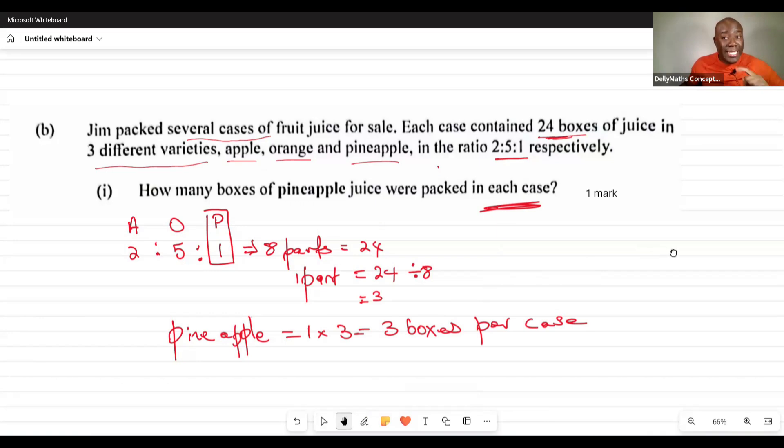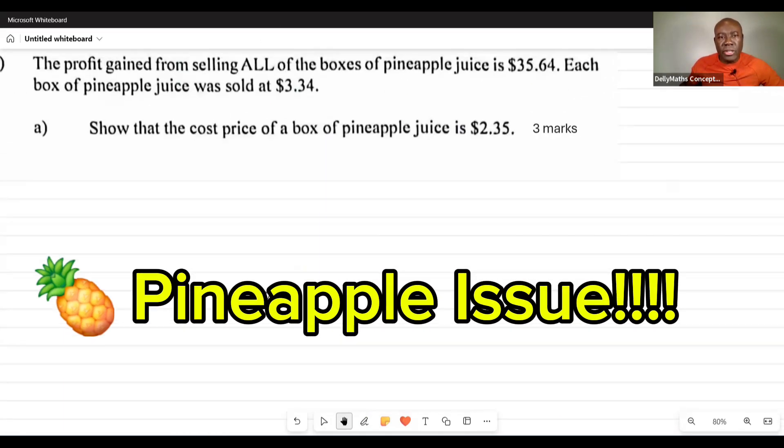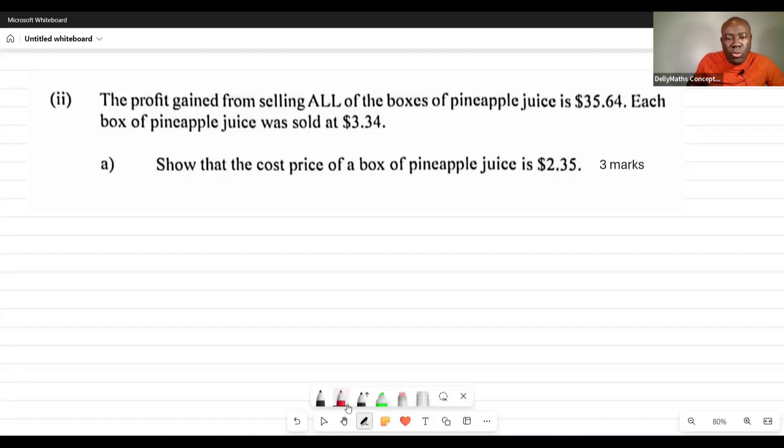Now let's look at the part of the question that may be problematic. The profit gained by selling all boxes of pineapple juice is $35.64. Each box was sold for $3.34. They're saying show that the cost of a box of pineapple was $2.35. For three marks, they really want you to dig into something. Ordinarily they would have given us the number of boxes or cases, but they didn't, which means we're going to approach this from a different angle.